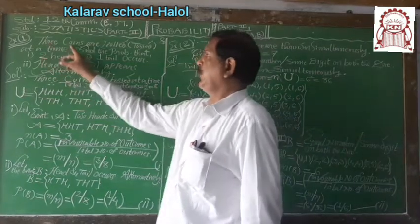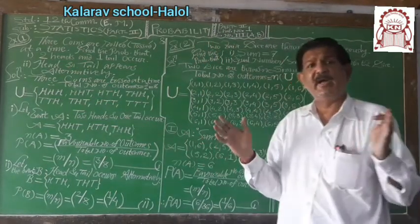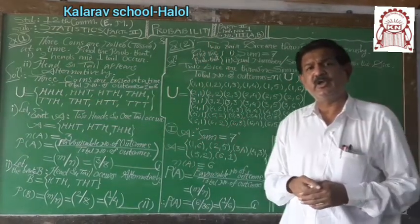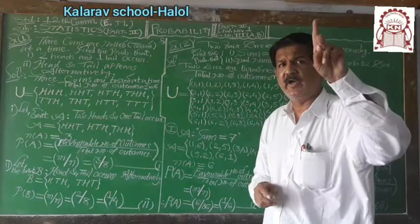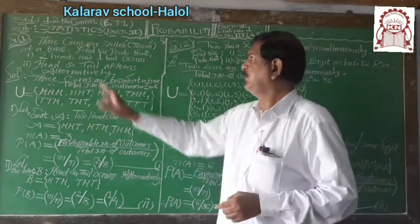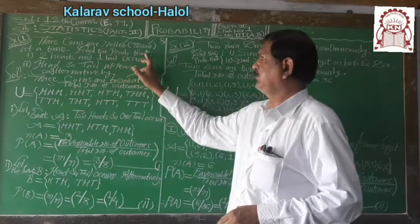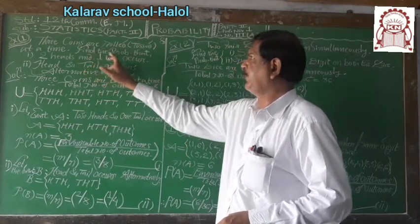3 coins or 3 unbiased coins are tossed simultaneously, or a coin is tossed for 3 times. Find the probability that...